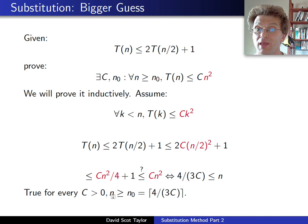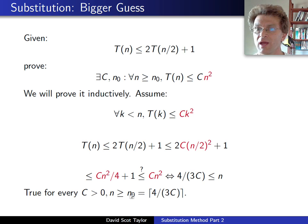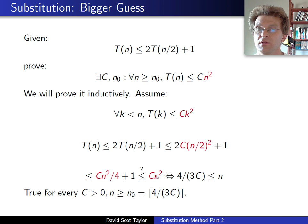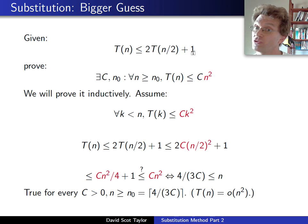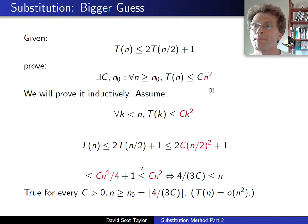For any positive c, for n at least the ceiling of 4/(3c) as our n₀ value, we have t(n) ≤ c·n². We've proven not only that t(n) is O(n²), but that t(n) is little-o(n²) — not surprising, since last time we saw t(n) ≤ 2t(n/2) + n is also little-o(n²). So making this function smaller, it's not surprising we're still strictly upper bounded by an n² function.